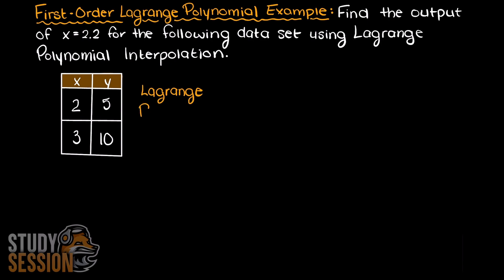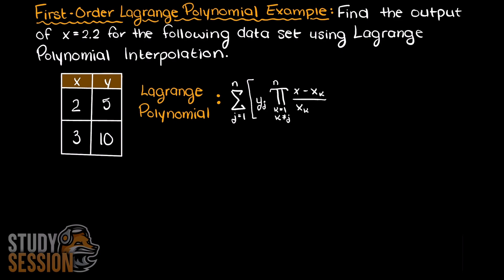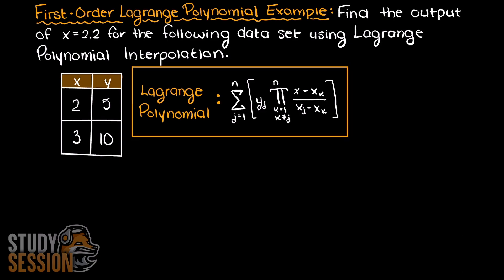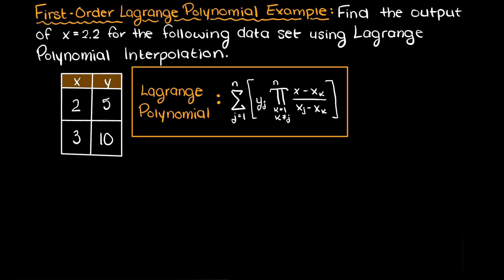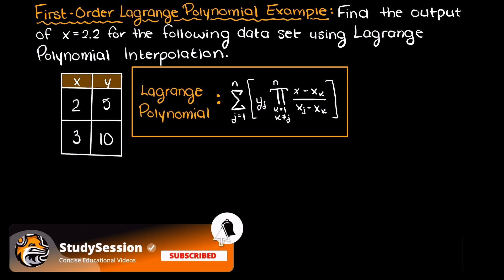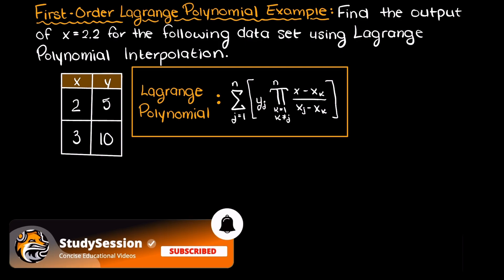I am going to take a second and write out the general formula for any order Lagrange polynomial. If you have seen our previous video on Lagrange polynomials, we talked about the degree of Lagrange polynomials, and since we have two data points present we will have two terms in our first order Lagrange polynomial. Our order is our number of data points minus one.